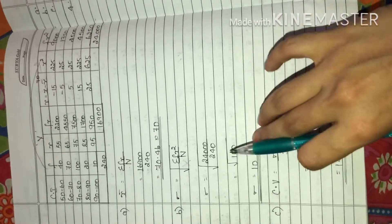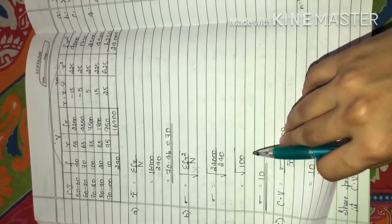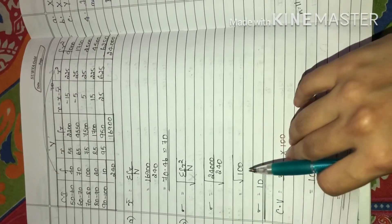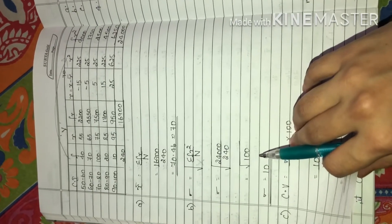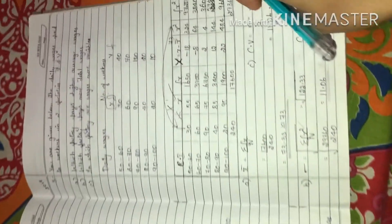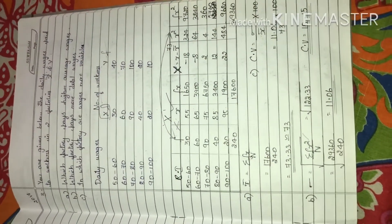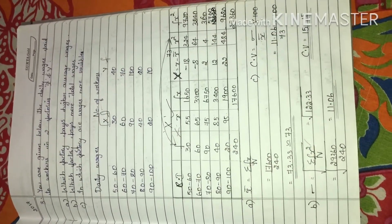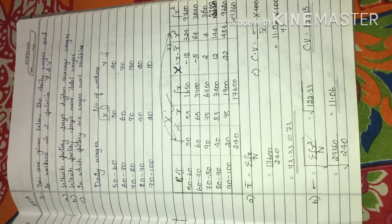These are the only two types of questions asked for coefficient of variance, and this topic is very important for 14 marks. Make sure you attend this question — it is a very easy method and solution. Thank you.